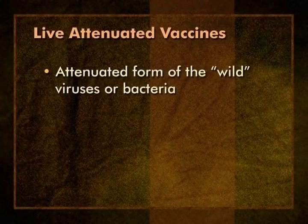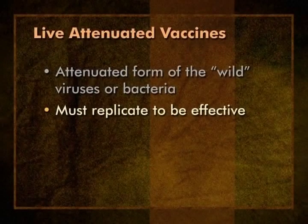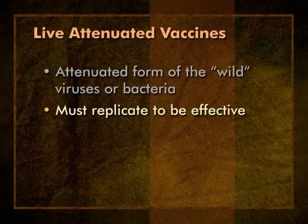The immune response to a live vaccine is very similar to active immunity that results from infection with the disease-causing form of the organism. In both situations, the infectious organism replicates until an immune response is generated, which eliminates the invading pathogen. We will be mostly talking about live virus vaccines, since we rarely use live bacterial vaccines in the United States. There are several characteristics of live vaccines of which you should be aware. Live vaccines are an attenuated or weakened form of the wild viruses or bacteria. For example, the measles vaccine used today originally caused measles disease in a child in 1954. It took nine years to transform the wild measles virus into the vaccine virus used now. Live vaccines must replicate to be effective and to produce an immune response.